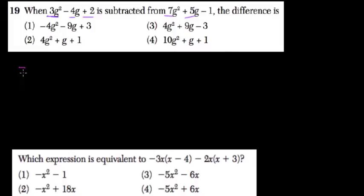So that means we have 7g² + 5g - 1, and then we subtract each term here. I subtract them all separately; it helps me keep track of everything. So minus 3g²,